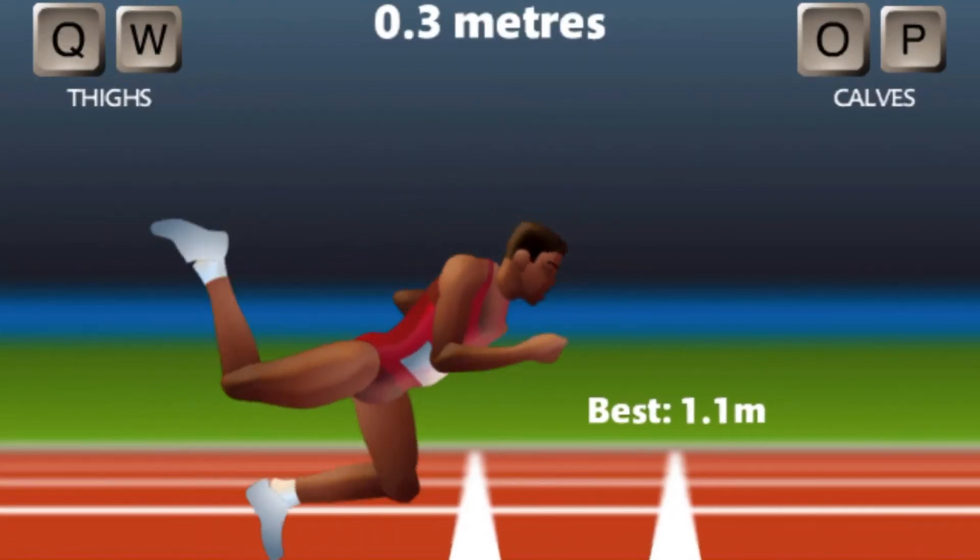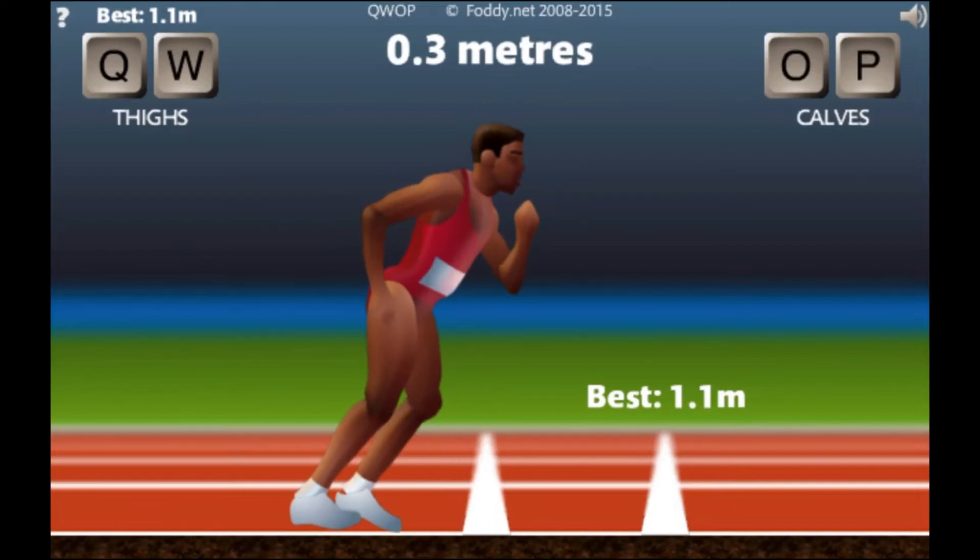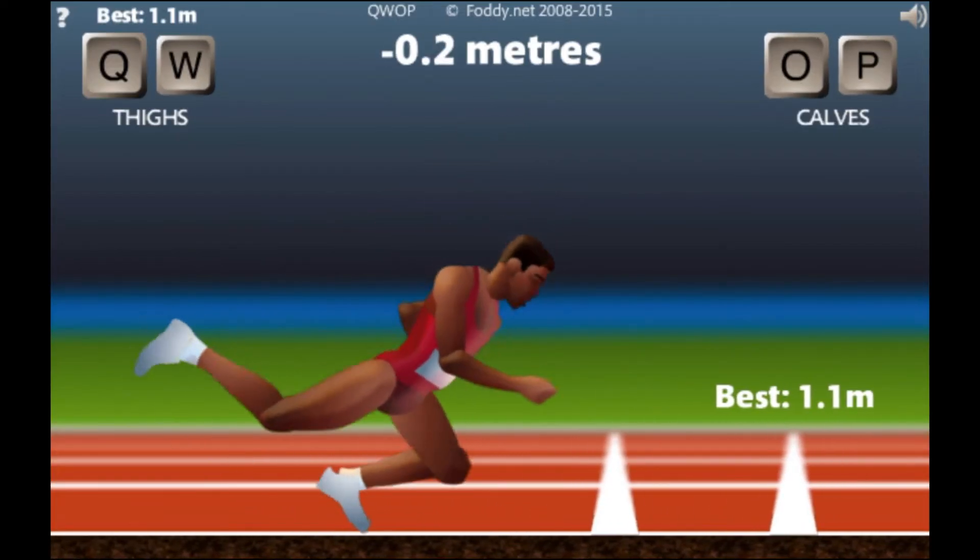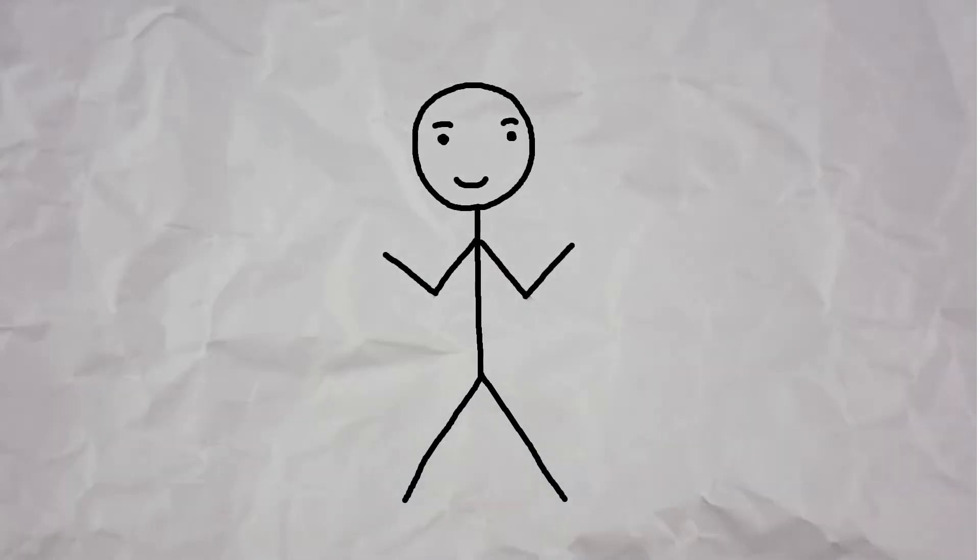You control this guy and your goal is to run for 100 meters. The catch is, you can only control him using these 4 buttons on your keyboard. If you think that sounds easy, here's me playing the game. I have no idea how an AI will do this.